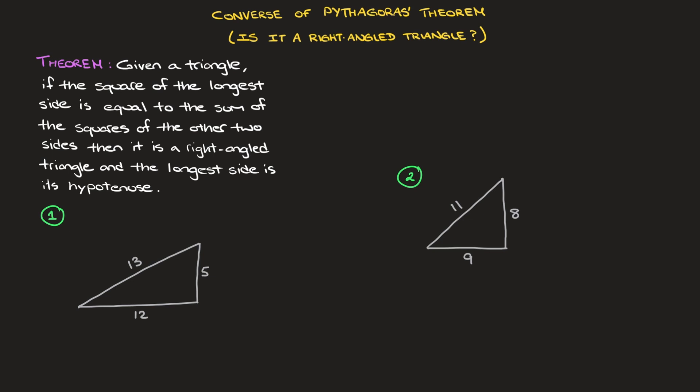To save us a bit of time, I've already written the theorem right here. I'm going to illustrate what it is in just a second, but first let me read it out. The converse theorem states that given a triangle, if the square of the longest side is equal to the sum of the squares of the other two sides, then it is a right-angled triangle and the longest side is its hypotenuse.